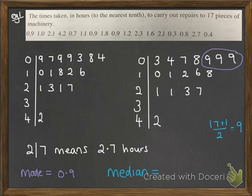And the median, well, we've got seventeen pieces of data. Seventeen plus one over two gives us nine, so we're looking for the ninth piece of data right there. That gives us 1.1 hours.